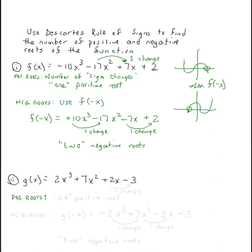So for positive roots, let's take a look for some sign changes. Two to seven, no change. Seven to two, no change.